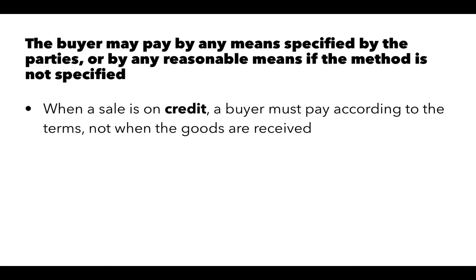The buyer has an obligation to accept the goods and an obligation to pay for the goods. The buyer can pay by any means specified by the parties, or by any reasonable means if the method is not specified — what is reasonable under the circumstances, what do others in similar circumstances do. When a sale is on credit, the buyer must pay according to the terms of the credit agreement, and not when the goods are received.